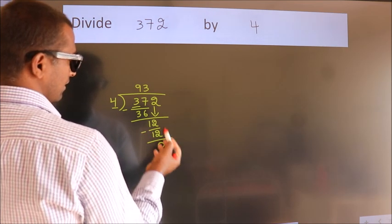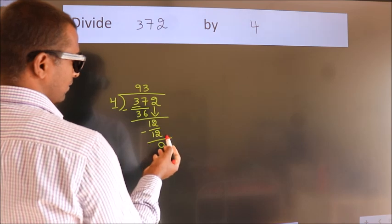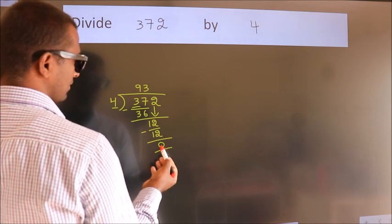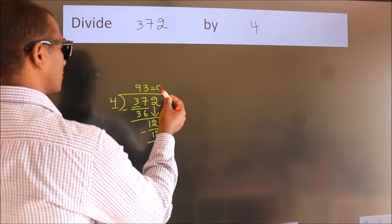After this, there are no more numbers to bring down. We have remainder 0, so this is our quotient.